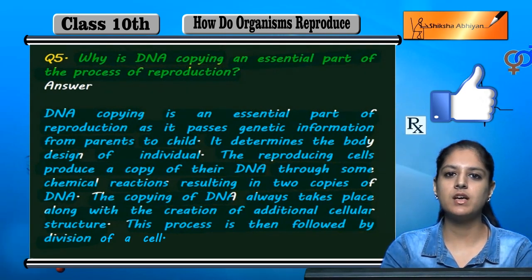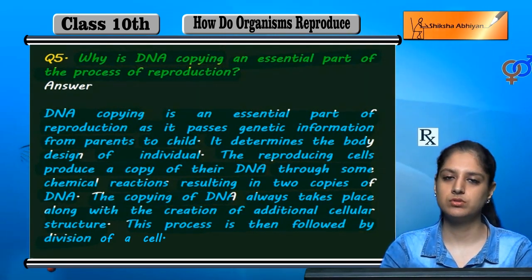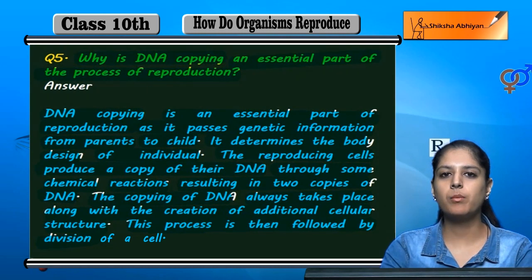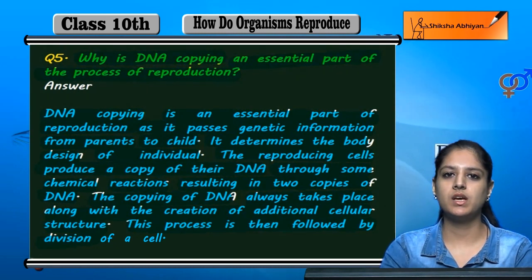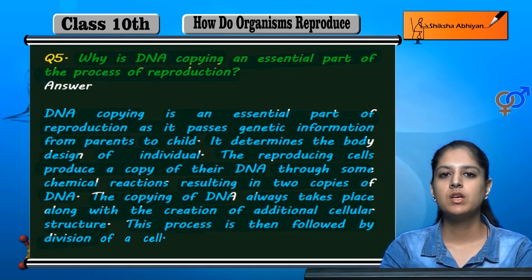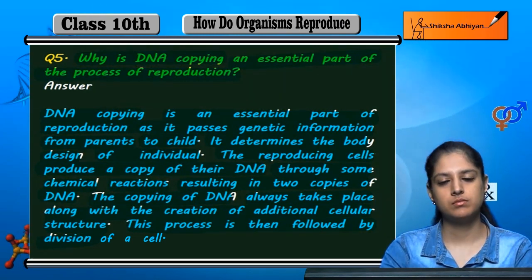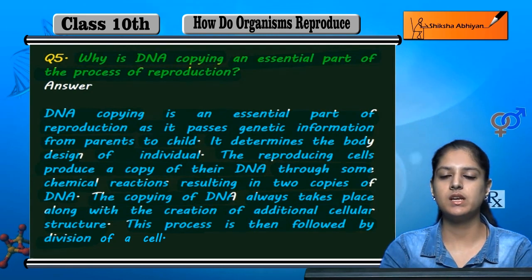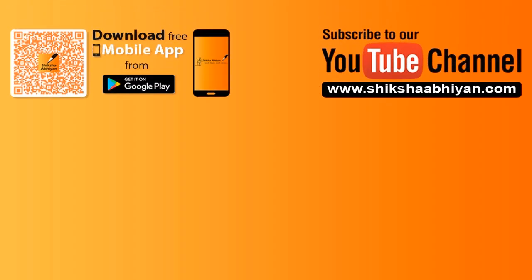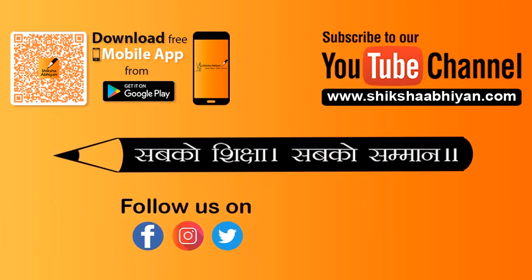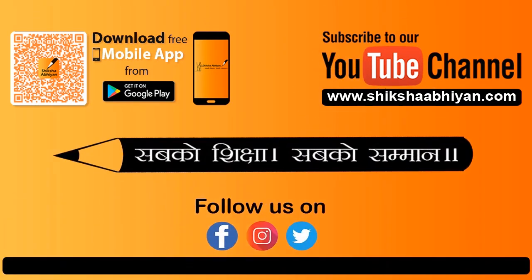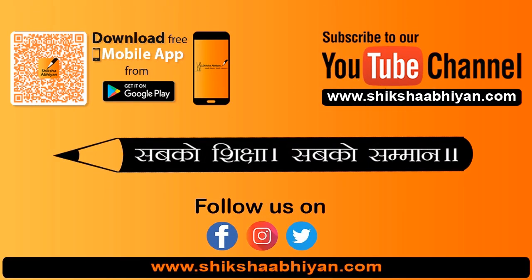The cell is then divided along with copies of DNA. DNA copying is very important for one type of individual to reproduce, and the parent's characters are passed on to the offspring.